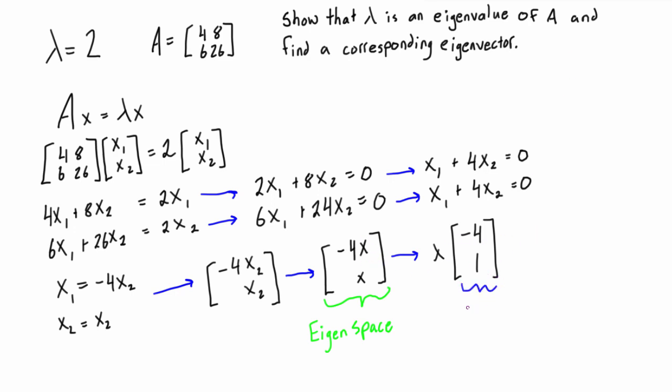Really, because any vector that has this form with negative 4 and 1 multiplied by a scalar, any of those vectors are eigenvectors that belong to this eigenvalue of 2. So really, negative 4, 1 is what this question was asking for—is an eigenvector that corresponds to the eigenvalue. So really, at that point, we have actually solved what the question was asking us for, because we have found a vector that satisfies this equation.